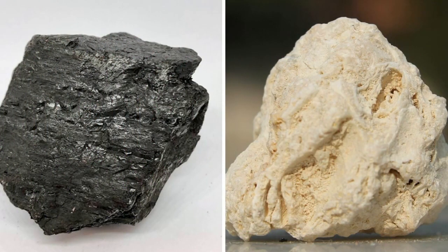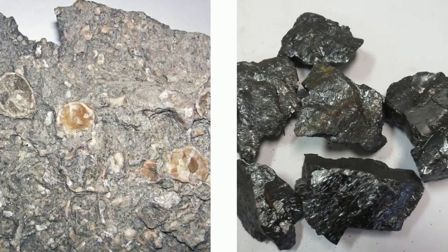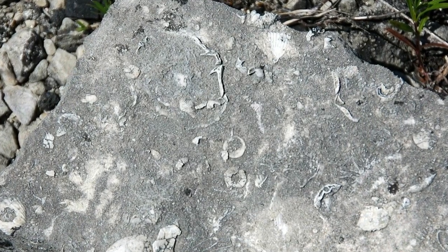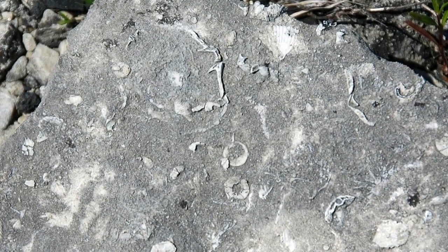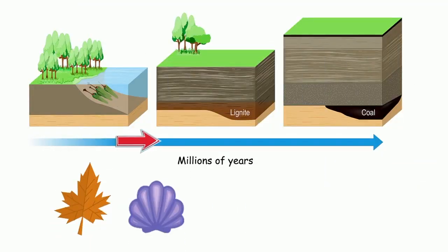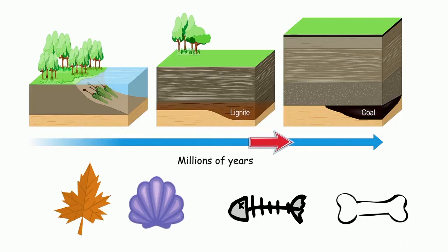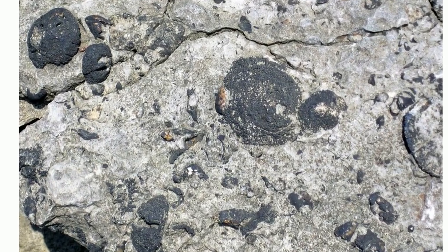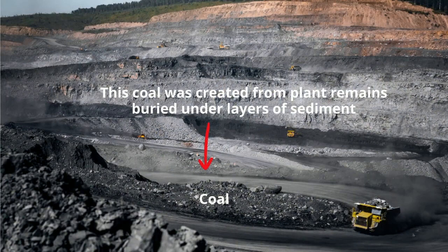Organic sedimentary rocks are sedimentary rocks formed from once living matter. The sediment in an organic sedimentary rock is made of fossils. Organic sedimentary rocks form from the accumulation and lithification of organic debris such as leaves, roots, shells, and other plant and animal material. The hard parts of animals such as bones and shells can become cemented together and over time make a rock, or plant remains may be covered underground for millions of years.